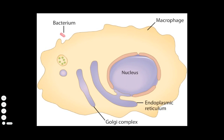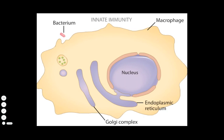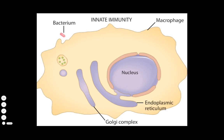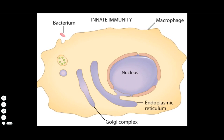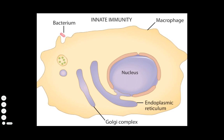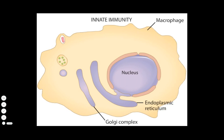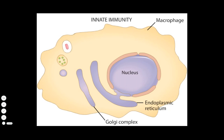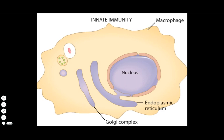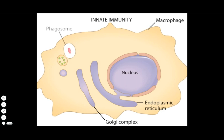They have two functions. As part of innate immunity, they kill invaders directly, taking them in using phagocytosis. Protrusions from the macrophage surface extend and clasp nearby bacteria, pulling them into the cell. The resulting vesicle is called a phagosome.